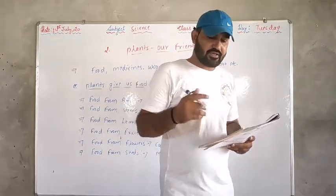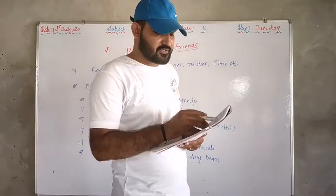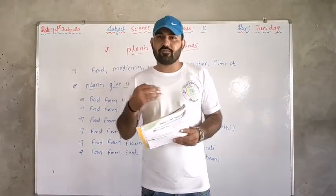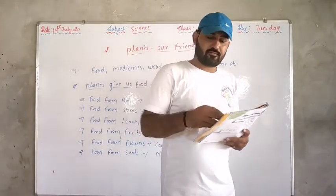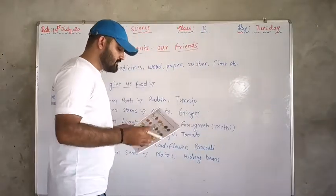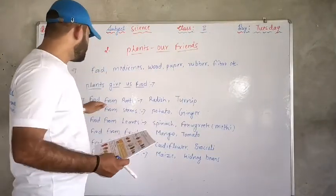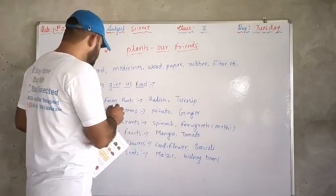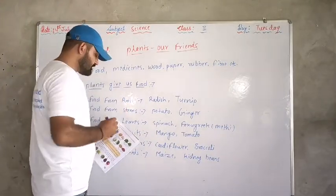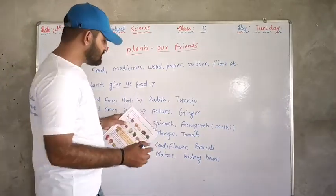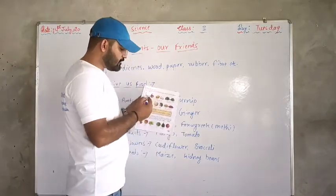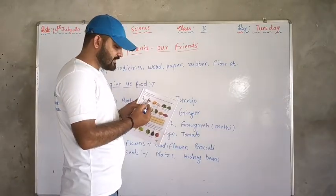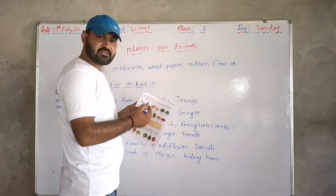We get food from different parts of plants. We have a category called food from roots. What is an example? Radish.